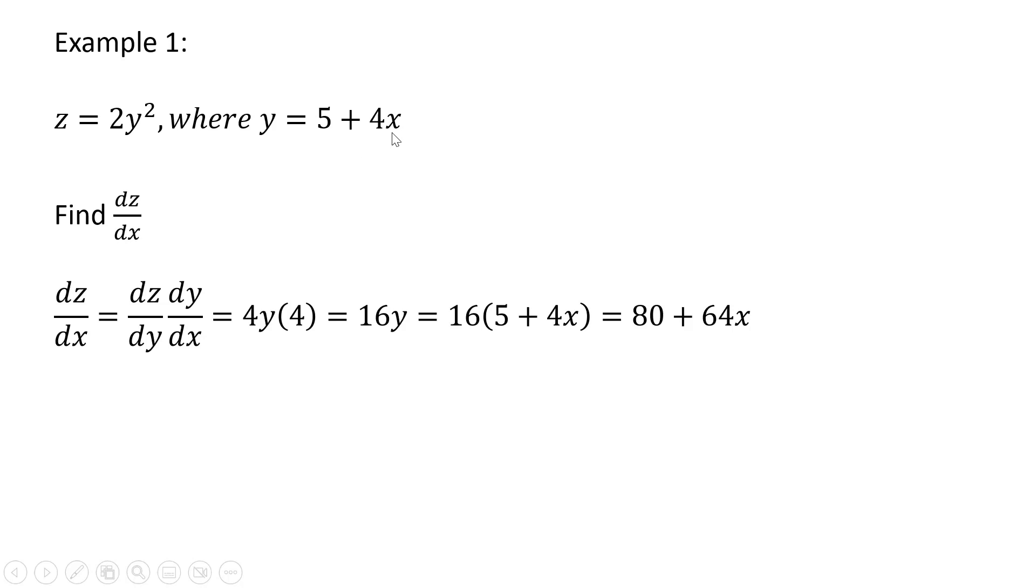And since y is 5 plus 4x, I'm going to make that substitution. Now if we just multiply this through, 16 times 5 is 80, 16 times 4x is 64x, and that is our result. So the derivative of z with respect to x, we get 80 plus 64x.